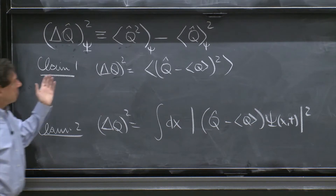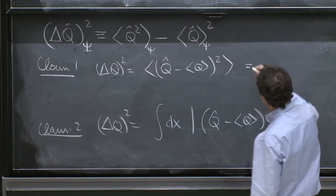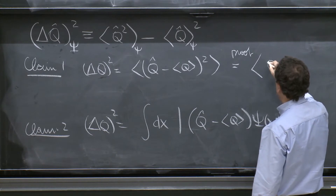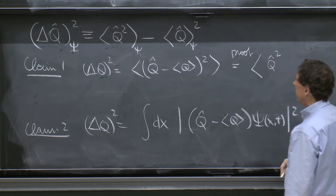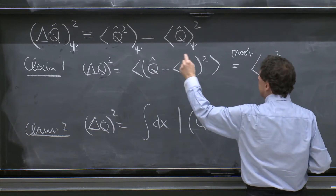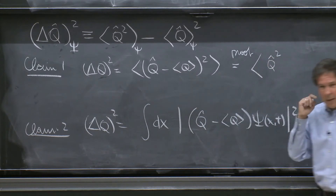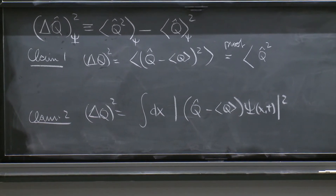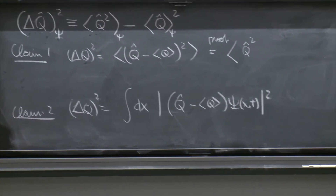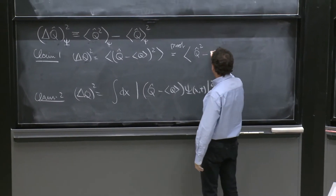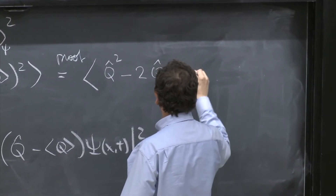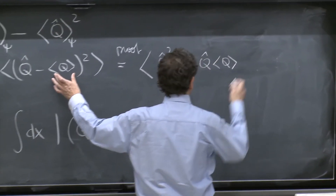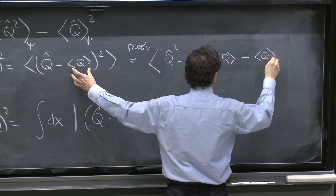Claim 1 is proven by direct computation. You can expand what is inside the expectation value: it's Q̂ squared, and then the double product of Q̂ and this number. The number and Q̂ commute, so it is really the double product — you have (a+b)(a+b), giving ab plus ba, but if they commute, it's 2ab. So this is minus 2Q̂⟨Q⟩, and then the last term is the number squared, plus ⟨Q⟩².